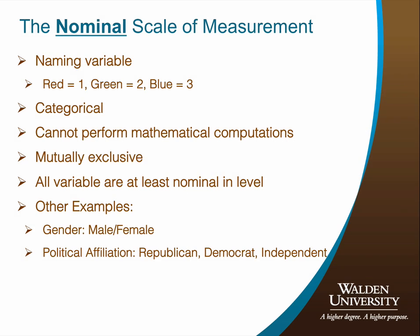A nominal variable, as the title suggests, is simply a naming variable. For example, color might be used as a variable in a study. This variable might have three levels, such as red, green, and blue. In this example, a numerical code — one for red, two for green, and three for blue — has been assigned to each level of the variable. However, this numerical code is not intended for mathematical calculations. It is merely assigned for identification or naming purposes. Numerical codes are normally assigned to nominal variables so that statistical software packages can conduct frequency counts for each level of the variable.